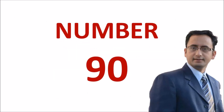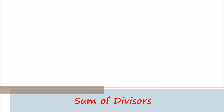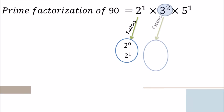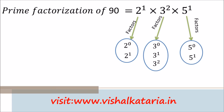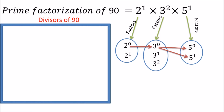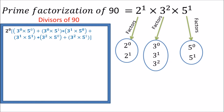This time we take the number 90. The prime factorization of 90 is 2 raised to 1 times 3 squared times 5. The factor 2 raised to 1 has 2 factors, 3 squared has 3 factors, and 5 raised to 1 has 2 factors. Taking 2 raised to 0 common from the first six divisors, we obtain the corresponding sum of terms.